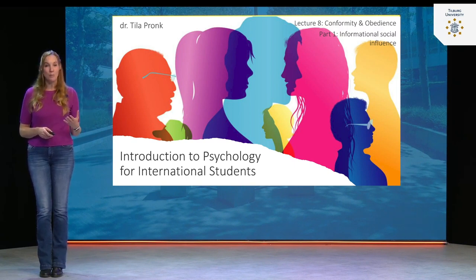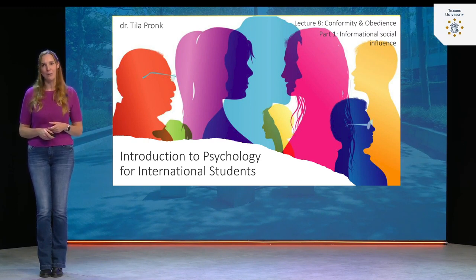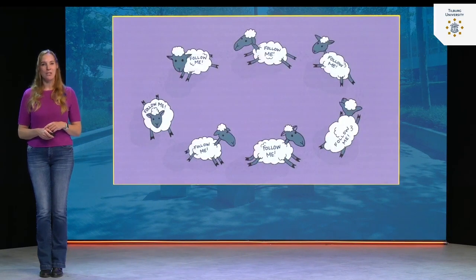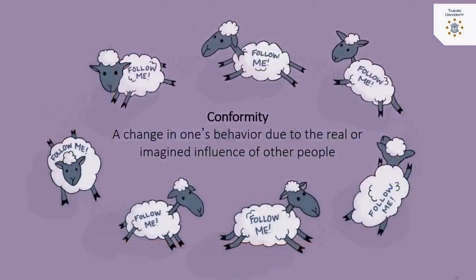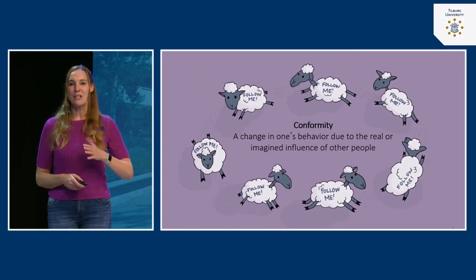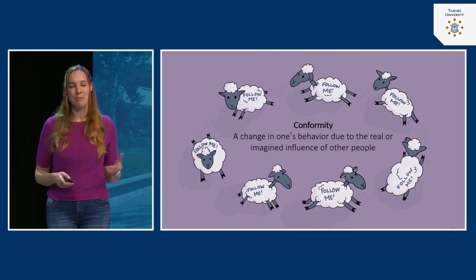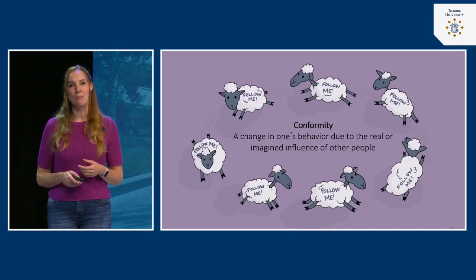We'll continue talking about conformity and obedience in this lecture because they are fascinating and also very powerful key topics in social psychology. We'll talk first about conformity, specifically informational social influence. So, what is conformity exactly? Conformity is when our behavior changes under the real or imagined influence of other people — we adapt our behavior based on what other people around us are doing.